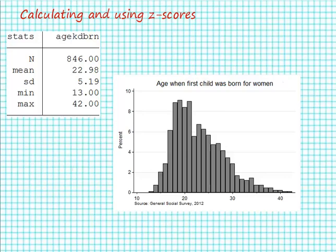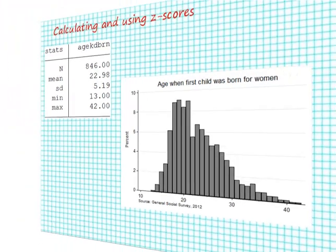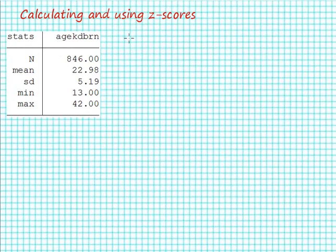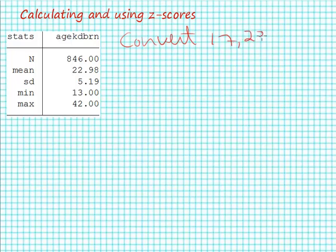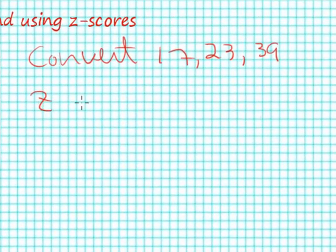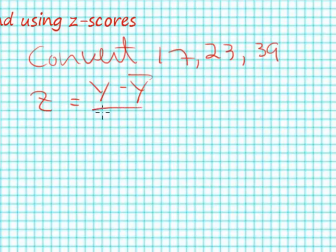We're going to work a couple of z-score problems here to show you how to calculate the z-scores. For our first problem we're going to convert a couple of ages to z-scores. Let's review the z-score formula: z equals some score minus the mean divided by the standard deviation.